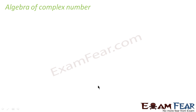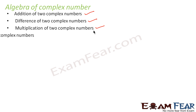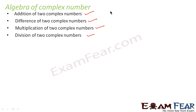Now let's discuss the algebra of complex numbers. Two complex numbers can be added, subtracted, multiplied, and divided. We will discuss all of these operations.